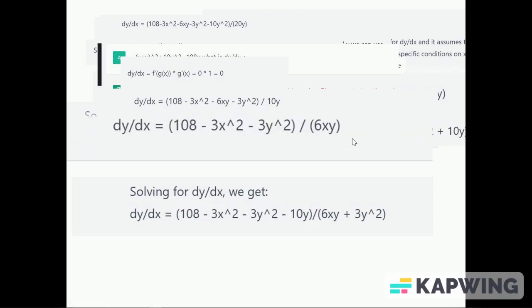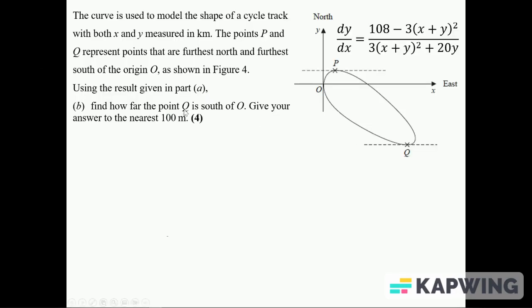Right, back to the question. So there's a cycle track which P and Q, furthest north, furthest south. Find out how far the point Q is south of O, give your answer to the nearest hundred meters. Now just here and here, the curve is horizontal, the dy/dx is zero. So at P and Q, dy/dx equals naught.